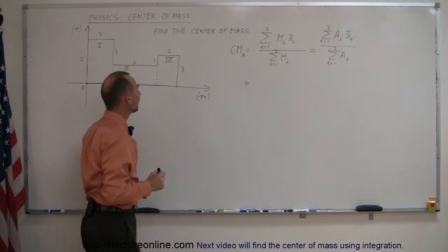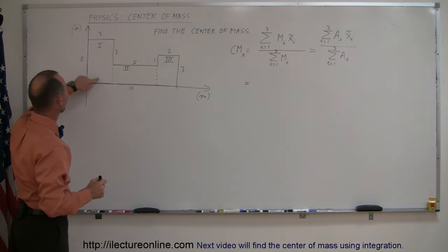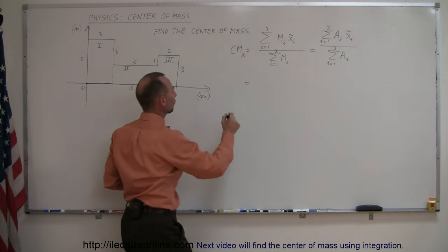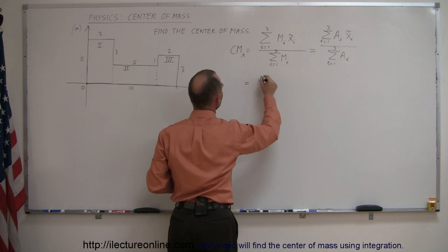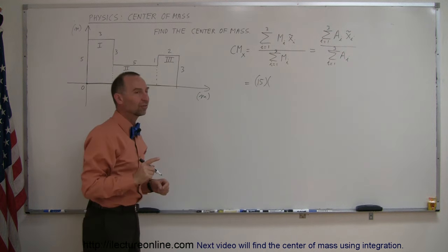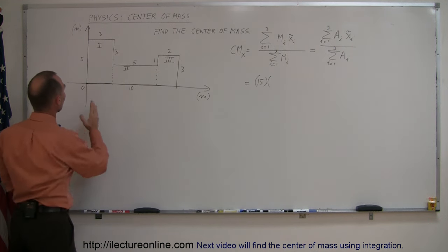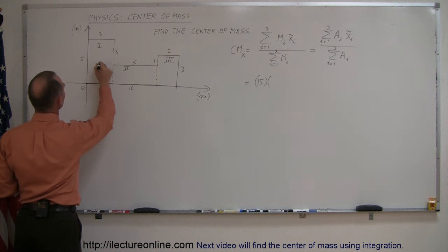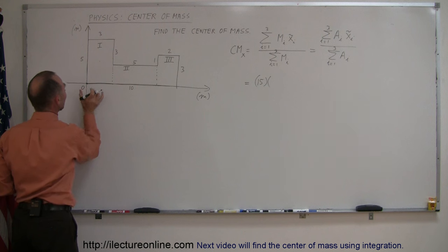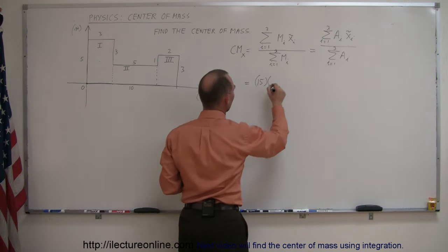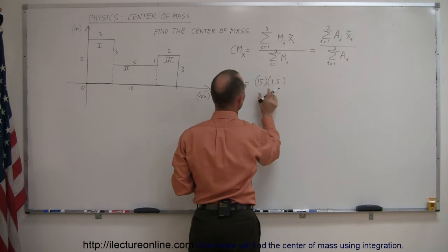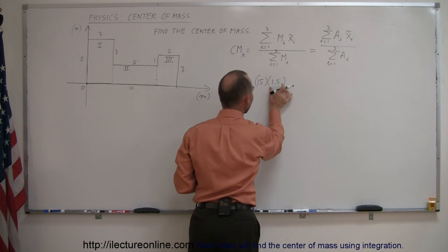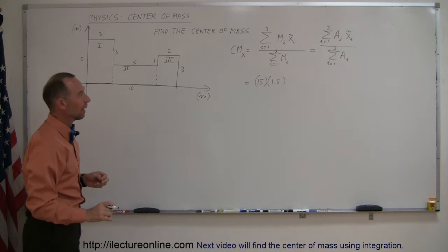So we take the area of the first piece: it's 5 times 3, which is 15 square meters. Times the center of mass in the x-direction of that piece — since it's 3 meters wide, the center of mass in the x-direction would be at the halfway point, which is 1.5 meters to the right of the origin. So we write 15 times 1.5. This is the area times the x-coordinate of the center of mass.